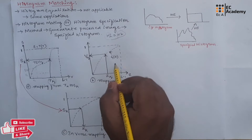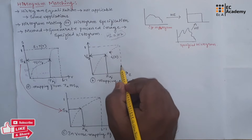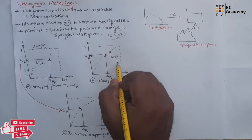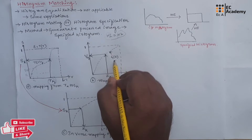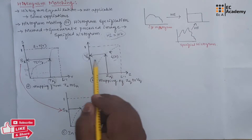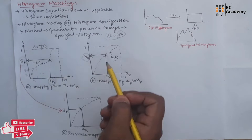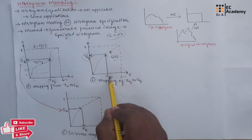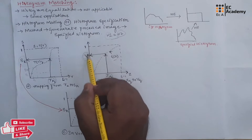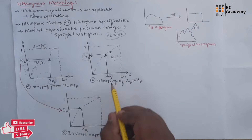We will take one more transformation G(z), which is the transformation function obtained from the probability distribution function values of R(k). Depending on those values, G(z) is designed. Here a pixel value zq is mapped with vq. Comparing the two diagrams, if vq is approximately equal to Sk, we can take the inverse transformation and map Sk to this z value. So if vq equals Sk, we take the inverse transformation and map the S value to z.